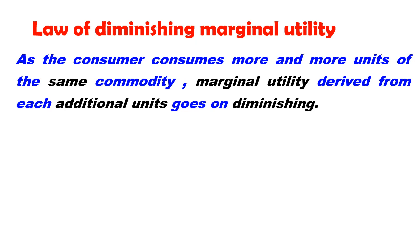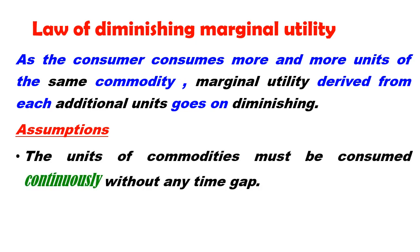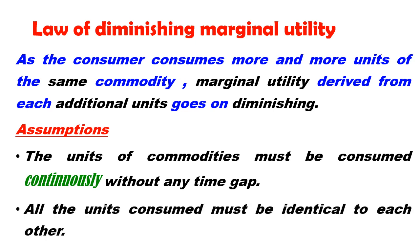the marginal utility derived from each additional unit goes on diminishing. This law is based on some assumptions. Firstly, we assume that the units of commodities must be consumed continuously without any time gap. Secondly, all the units consumed must be identical to each other. On the basis of these assumptions, let us explain the law with a simple example.